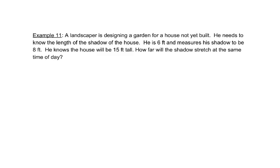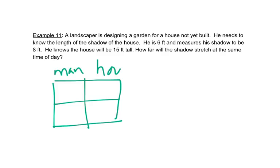So in this problem, our units are all feet, so that doesn't help us as much. But we have two things: we have a man and we have a house. And we also have the height and the shadow. So the height of the man is 6 feet, and his shadow is 8 feet.